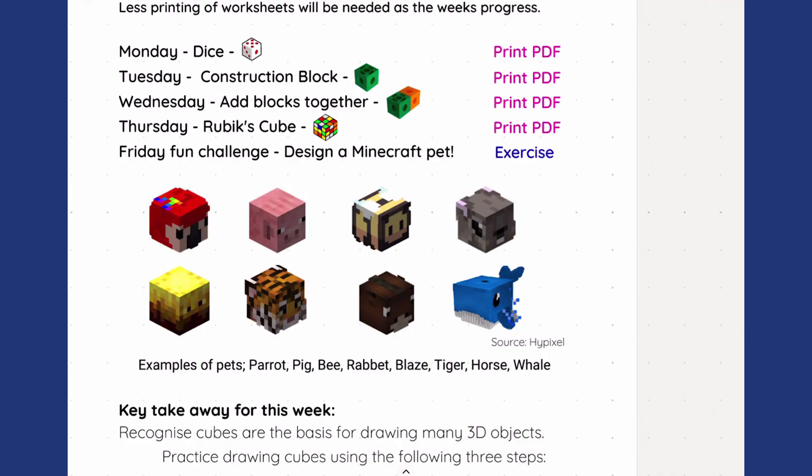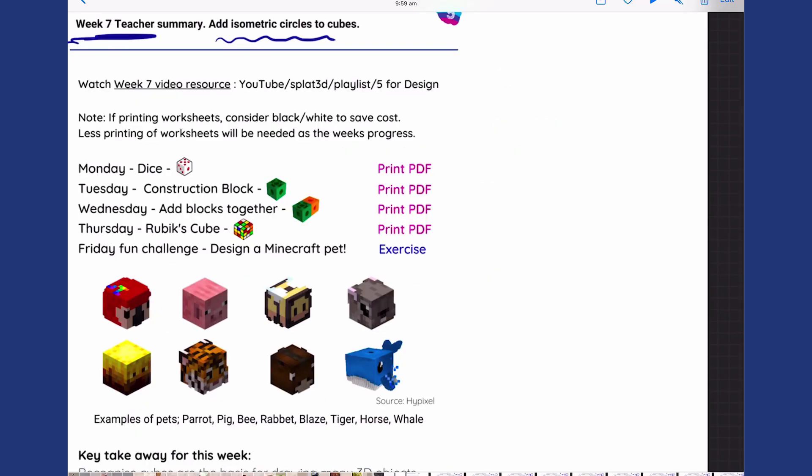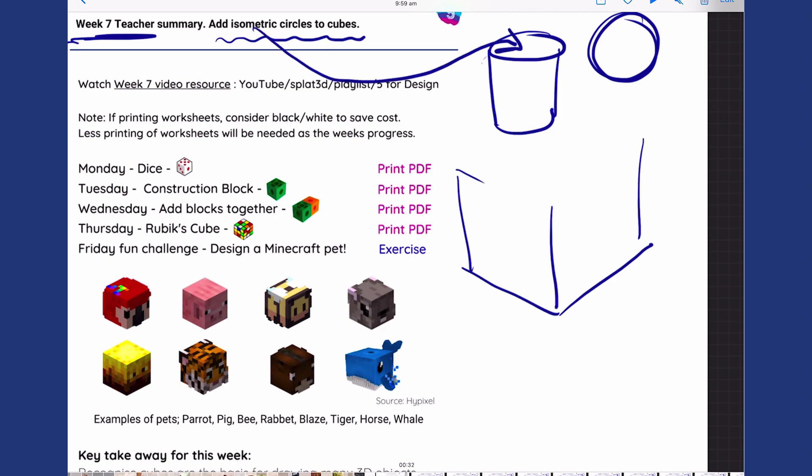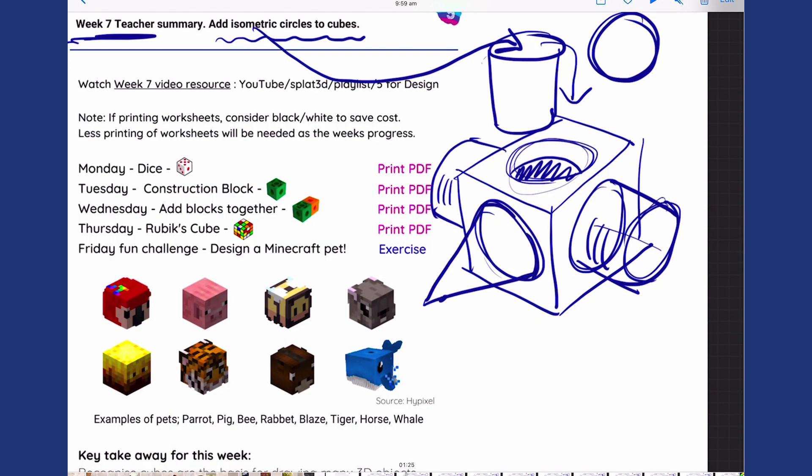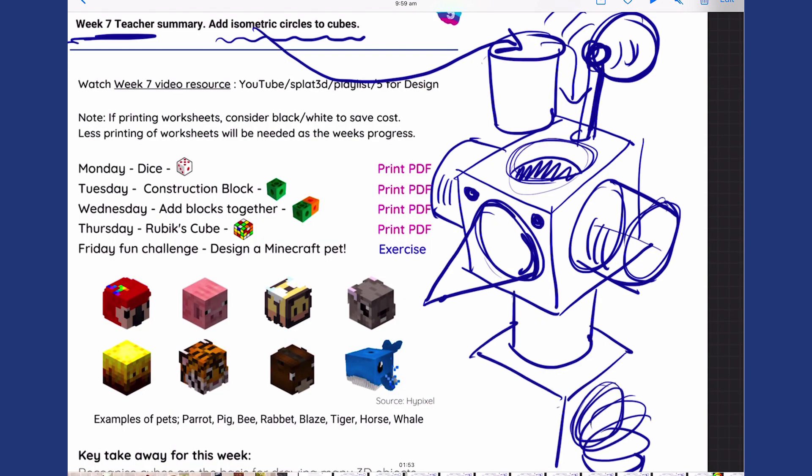Hi, it's Friday fun challenge day. Let's review what we've learnt this week. Circles, when viewed on angle, become cylinders. And now we know how to connect cylinders to squares, we can draw pretty much anything that you want to go ahead and design. For instance, a robot.